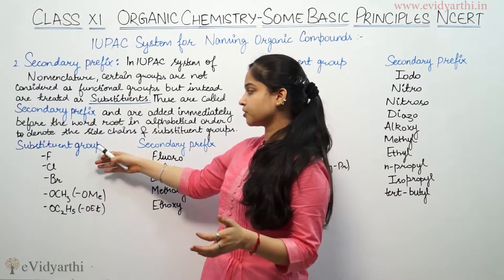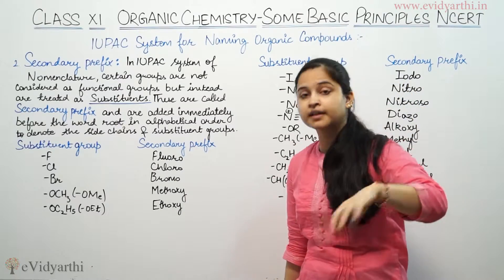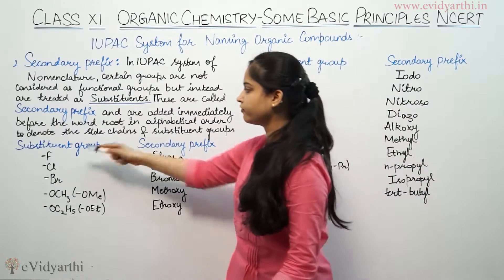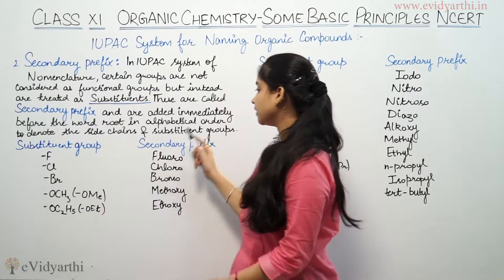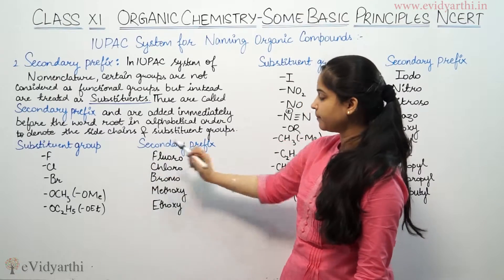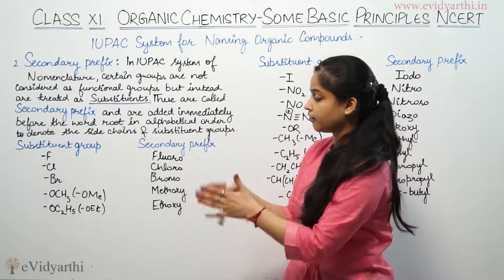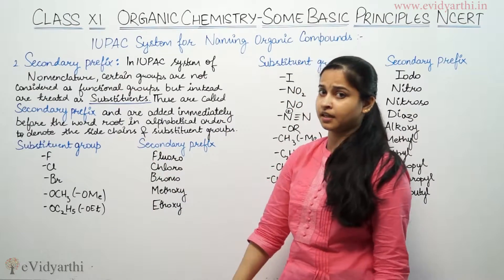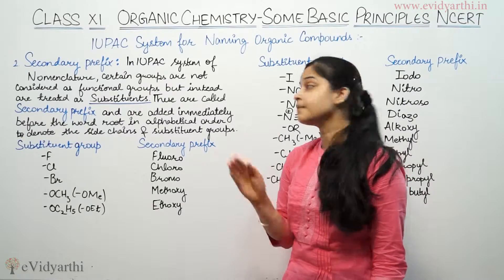Now we see which substituent groups exist and how we name them. Substituents and their secondary prefix names: if the substituent group is a halogen — fluorine (F), chlorine (Cl), bromine (Br) — these are named as fluoro, chloro, and bromo respectively. If a substituent group is present and we don't consider it as a functional group, we consider it as a substituent; these are known as secondary prefixes.